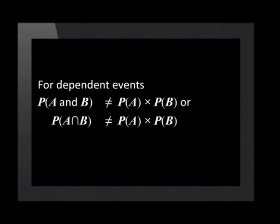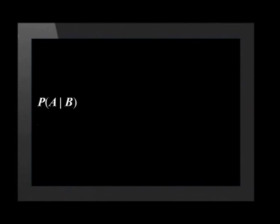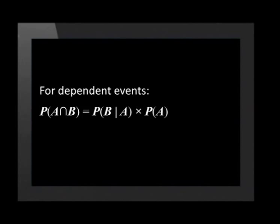For successive dependent events A and B, the probability of A and B is not equal to the probability of A times the probability of B. We call this a conditional probability. For dependent events, we work out the probability of one event given that the other has taken place. We write this as the probability of B given A, calculated using the formula: P(B|A) = P(A∩B) / P(A). We always divide by the event that the outcome is dependent on. By rearranging, for dependent events: P(A and B) = P(B|A) × P(A).